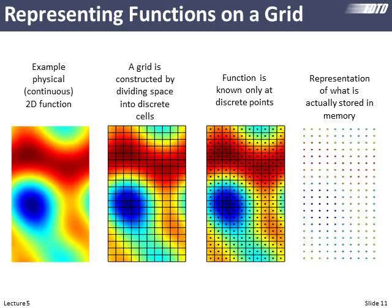The closer we space our points, the more accurately we can resolve the field. But with more points, our simulations take much longer to run. There's a tradeoff: we want more points for accuracy, but we also want simulations to be quick enough to be useful. We'll learn rules of thumb and best practices. This final grid on the right is how we really visualize the data we're storing.